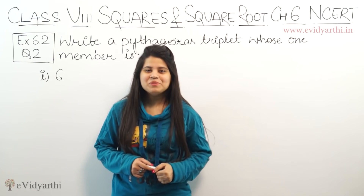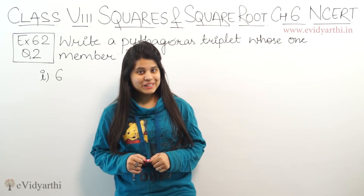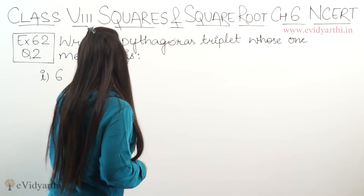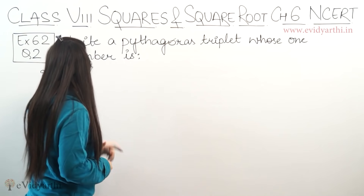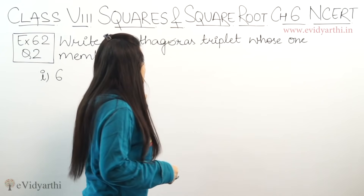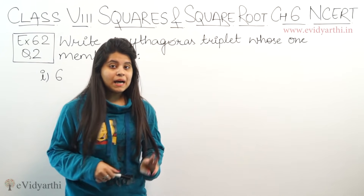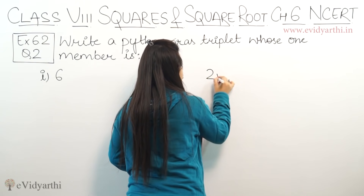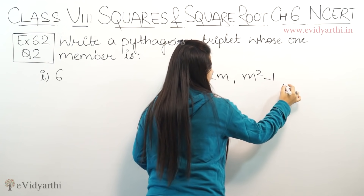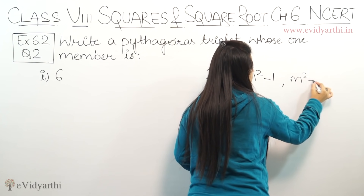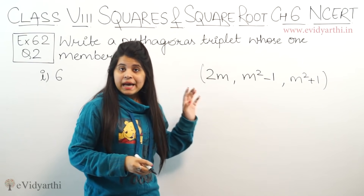Hello everyone, this is Manzi from evidiyathic.in coming to question number 2 exercise 6.2. In this question we have to write a Pythagoras triplet whose one member is 6. In a Pythagoras triplet there are 3 numbers and the numbers are 2m, m²-1, and m²+1. These 3 numbers form a Pythagoras triplet.